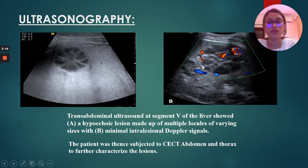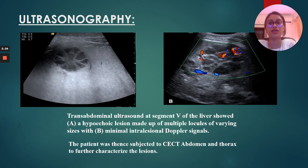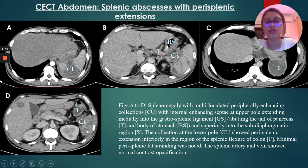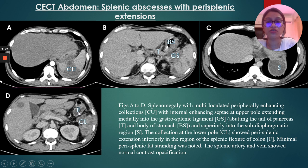The differential diagnosis of these hepatic and splenic lesions, including the thoracic finding of right mediastinal radiopacity, included tuberculosis and meliodosis. The patient was then subjected to contrast-enhanced CT of the thorax and abdomen to further characterize the lesions. CT abdomen revealed splenic abscesses with perisplenic extensions: splenomegaly with multiloculated peripherally enhancing collections with internal enhancing septae at the upper pole, extending medially into the gastrosplenic ligament, abutting the tail of the pancreas and the body of the stomach. Superiorly, this collection extended into a subdiaphragmatic lesion. The lower pole collection extended inferiorly in close proximity to the splenic flexure of the colon.